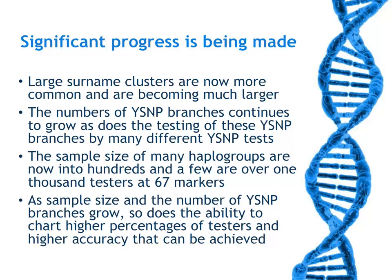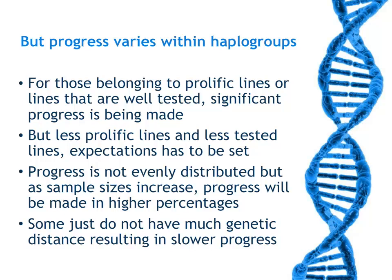There is significant progress being made for very large surname clusters, which are now becoming much more common and larger. The number of SNP branches continues to grow at a phenomenal rate, and many are being tested by various SNP tests. The sample sizes for haplogroups are now into the hundreds, and some are even up to 1,000 at 67 markers. As sample size grows and the number of SNP branches grows, so does the ability to chart a higher percentage of testers and obtain higher accuracy. But progress will vary within and among haplogroups.